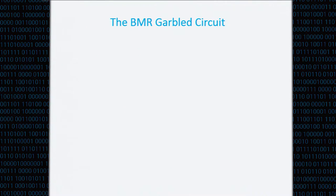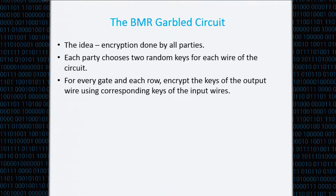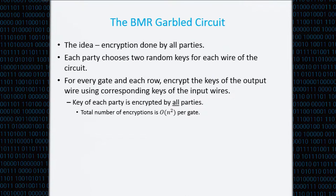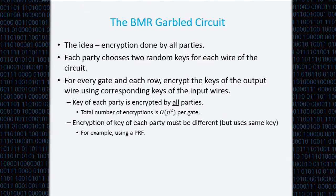If we do the encryptions collaboratively, we need to know how to compute the permutation obliviously. The idea of the BMR protocol is that the encryption is done by all the parties. Each party chooses two keys — one corresponding to the zero key and one corresponding to the one key. For each gate and each row, they all encrypt the output wire using the keys of the input wires. Each key of each party is encrypted by all the parties, so the total number of encryptions is O(N²), where N is the number of parties.